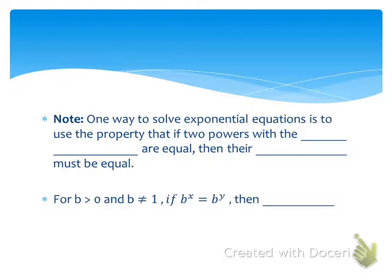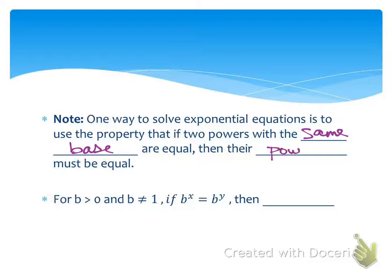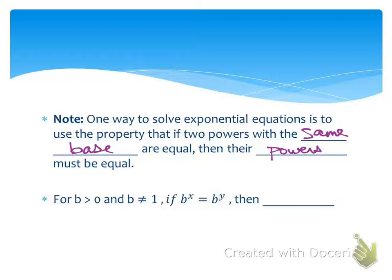One way to solve exponential equations is to use this property: if two powers with the same base are equal, then their exponents must be equal. That's what I was trying to convey in problem four of the warm-up — if you have the same base, we could just zoom in on the exponents. So if you have base to a power equals the same base to another power, we can say that their powers are equal.